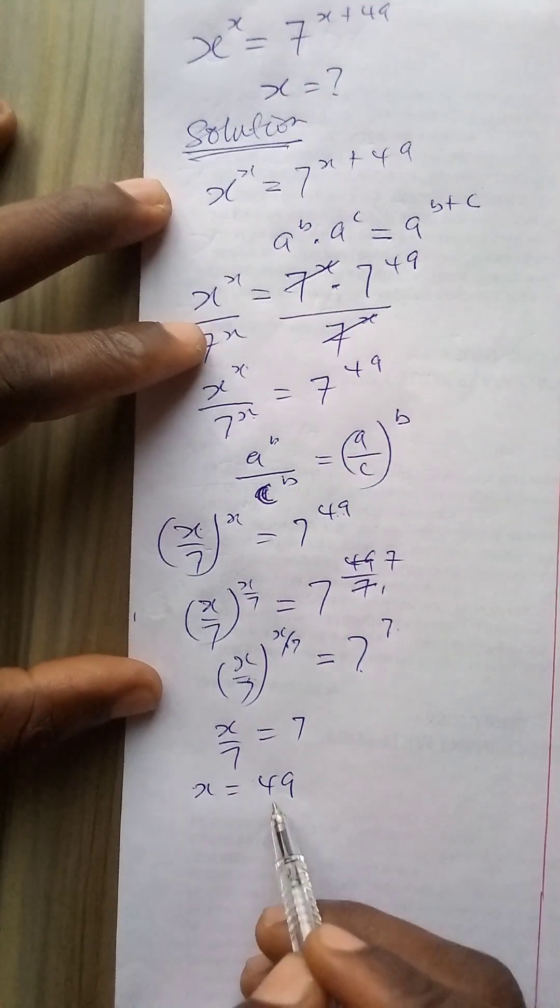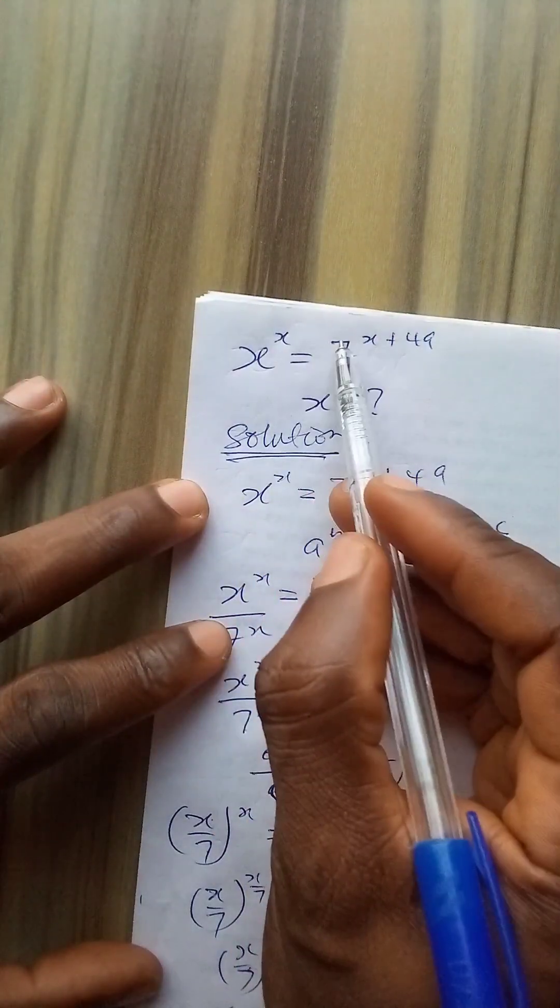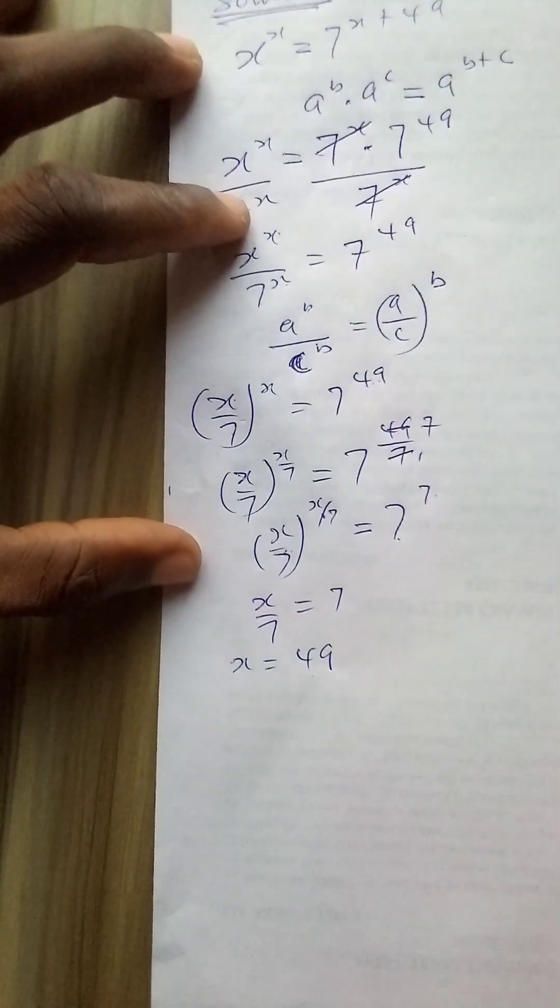If I substitute 49 for x where I see x in the original equation I have a balanced equation. So let us try it.